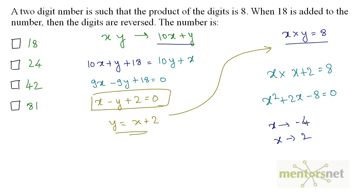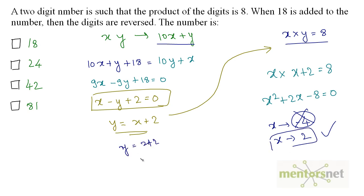We ignore the negative value and take x equals 2. Therefore y equals 2 plus 2 equals 4. So x is 2 and y is 4, and the number is 24.